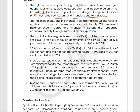The Indian economy and financial system remained robust and resilient, anchored by macroeconomic and financial stability. With improved balance sheets, banks and financial institutions are supporting economic activity through sustained credit expansion. The capital to risk-weighted asset ratio and the common equity tier 1 ratio of scheduled commercial banks stood at 16.8% and 13.9% respectively at end of March 2024. Scheduled commercial banks' gross NPA ratio fell to a multi-year low of 2.8% and the net non-performing asset ratio to 0.6%.